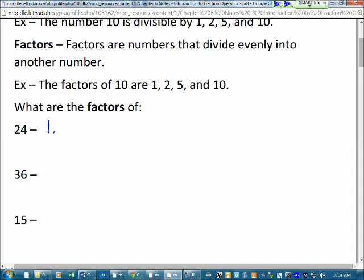1 will always be a factor of a whole number. So 1, 2, see if I miss any, 3, 4, 6, 8, 12, and 24. As soon as you get to halfway, then your next factor will always be the number itself, right? 24 goes into 24 once.